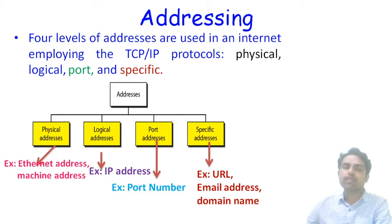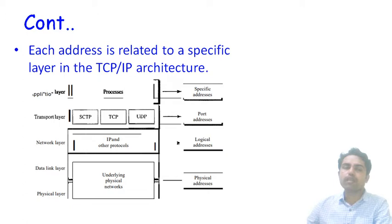Physical addresses are the Ethernet and machine addresses. Logical addresses, also called IP addresses, are the logical addresses. Port addresses refer to port numbers of the device. Specific addresses include URLs, email addresses, and domain names. Each address type is related to a specific layer in TCP/IP: physical addresses relate to the physical and data link layers, logical addresses relate to the network layer, port addresses relate to the transport layer, and specific addresses relate to the application layer.